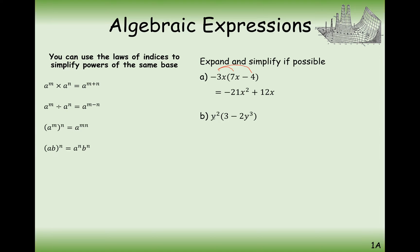The next example here is y squared bracket 3 minus 2y cubed. And in this case here, we expand the brackets. So we get 3y squared from the first term. And from the second term, y squared times y to the power of 3. You add the indices here and you get y to the power of 5.